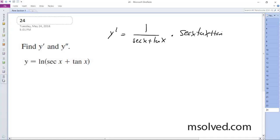Oops, plus tangent squared x. So this ends up being equal to secant x tangent x plus, oops, I made a mistake, that should be secant squared, plus secant squared x over secant x plus tangent x.